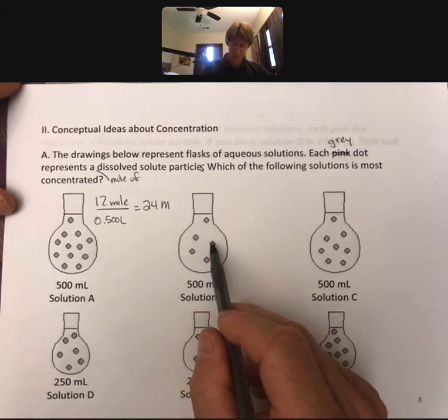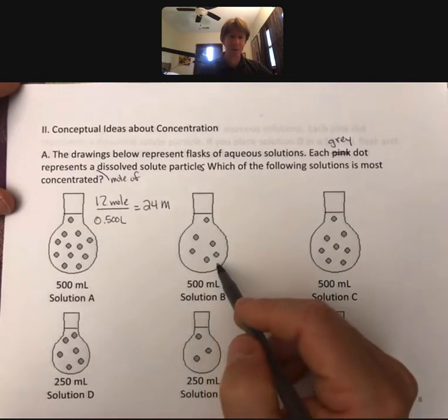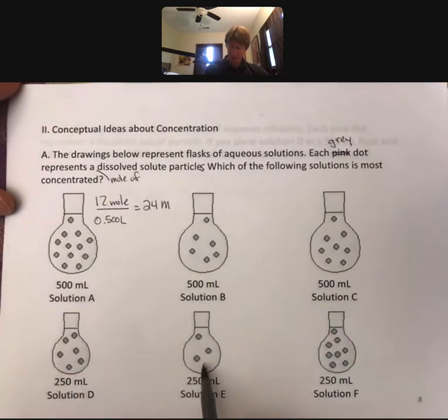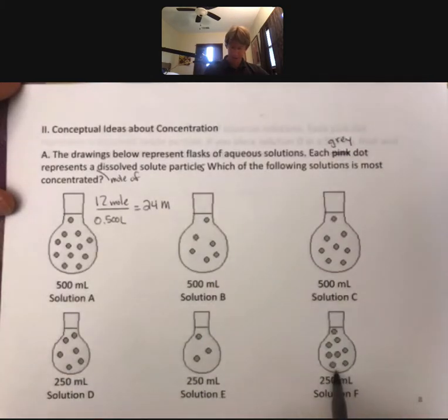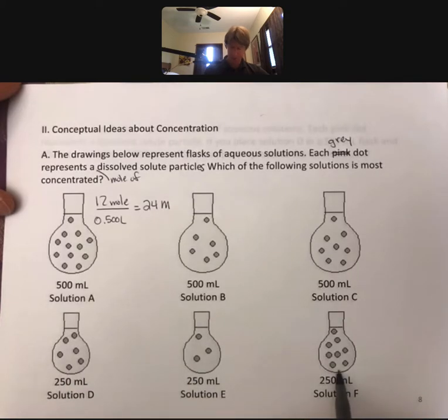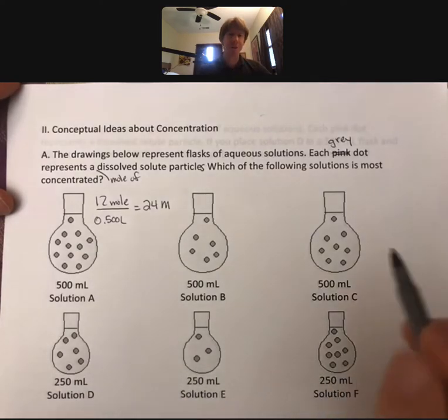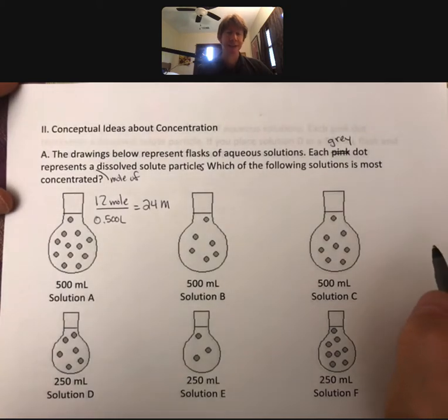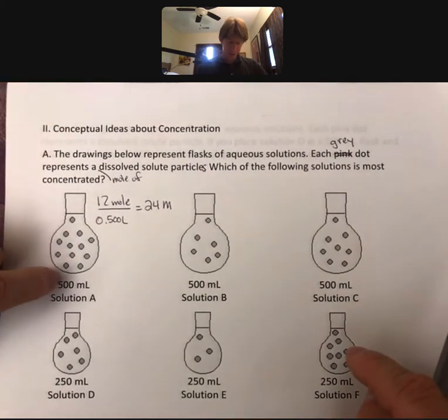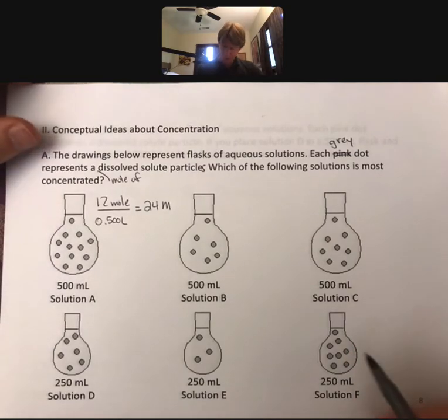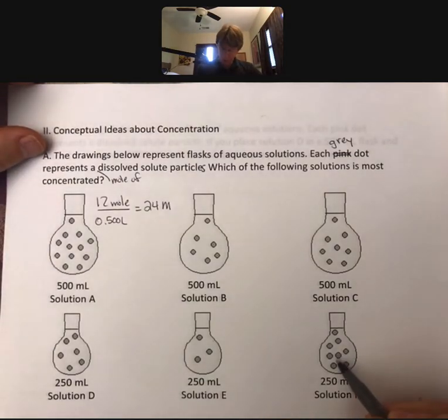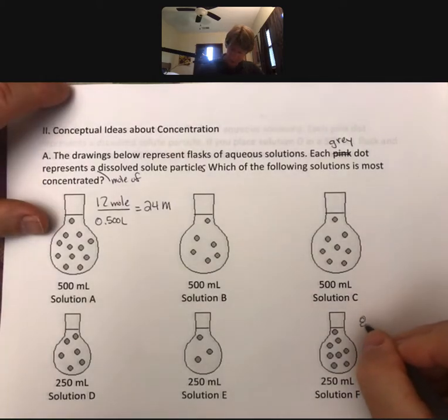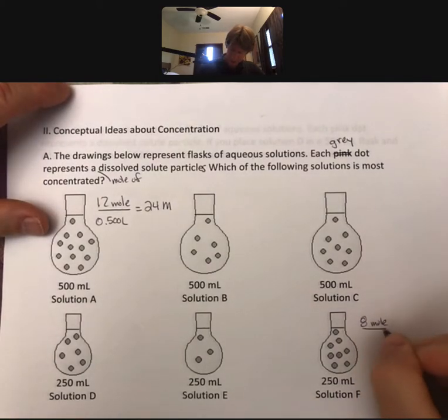Then we come down here and we would look at the number of dots. It looks like this one has the most dots, so of these three with the same volume, this one would be the most concentrated. To get an idea of how concentrated so we can compare it to this one which has a different volume, we count them up: 1, 2, 3, 4, 5, 6, 7, 8. We call them 8 moles and we've got 0.250 liters.